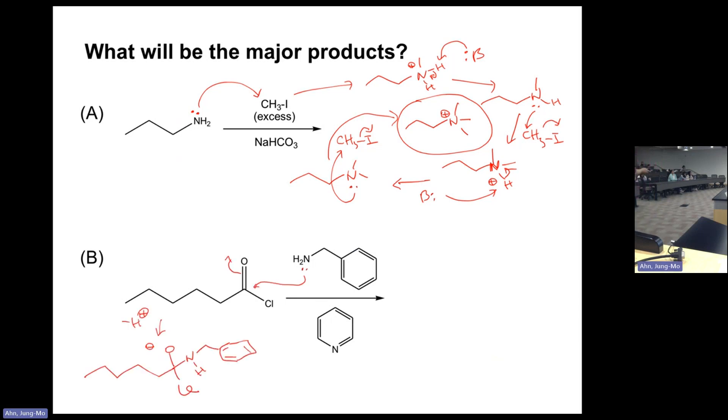The amine is the one that makes the attack. The pi electrons go to oxygen, so we have a tetrahedral intermediate.